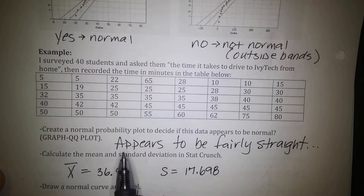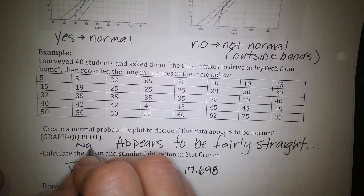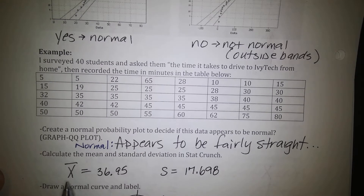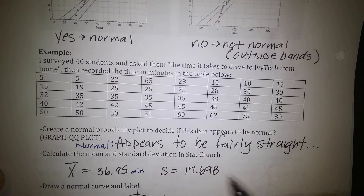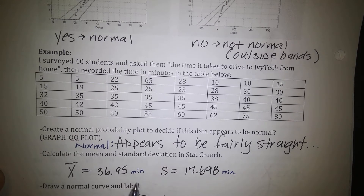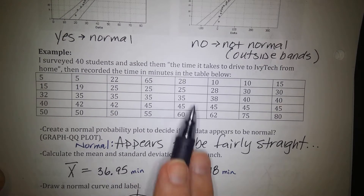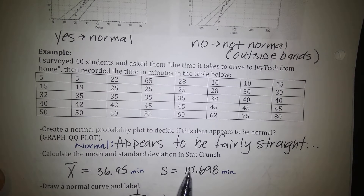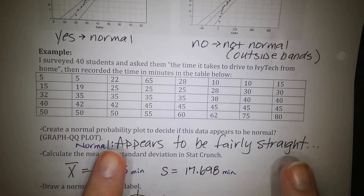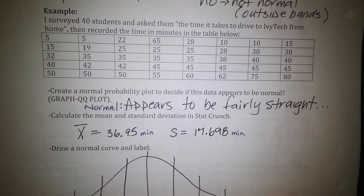Given the QQ plot we created in StatCrunch, it appears to be fairly straight, so we do think this is indeed normal. We found the sample mean of 36.95 minutes and sample standard deviation of 17.698 minutes. Now we need to draw a normal curve and label it. Since we know it's normal, draw a bell-shaped curve and label the middle at 36.95. From that middle, go out 17 units in each direction to find each of the standard deviations along the way.